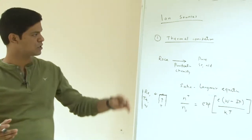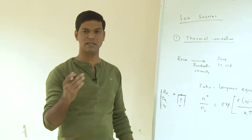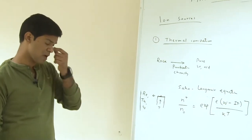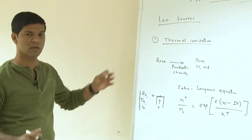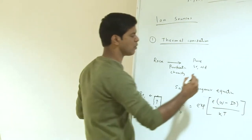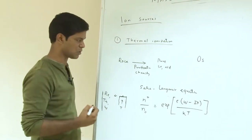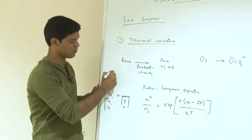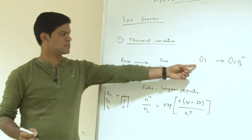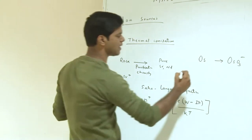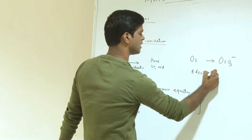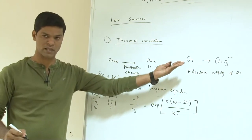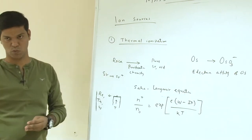The challenge or limitation of thermal ionization is that many times you cannot go beyond a certain temperature, and hence it is difficult to ionize elements with very high ionization potential. In that case, there has been an attempt to create ionization in its negative form. For example, instead of taking osmium which has a high ionization potential, you can measure it in the OsO₃⁻ negative form. Like in case of strontium we refer to strontium plus, for osmium you use OsO₃⁻, mainly because of the high electron affinity of osmium.